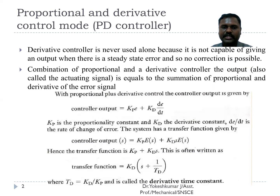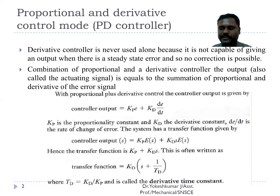The equation becomes: controller output equals KP·E plus KD·(dE/dt), where KP is the proportional constant and E is the error signal, and KD is the derivative constant and dE/dt is the rate of change of error signal with respect to time.